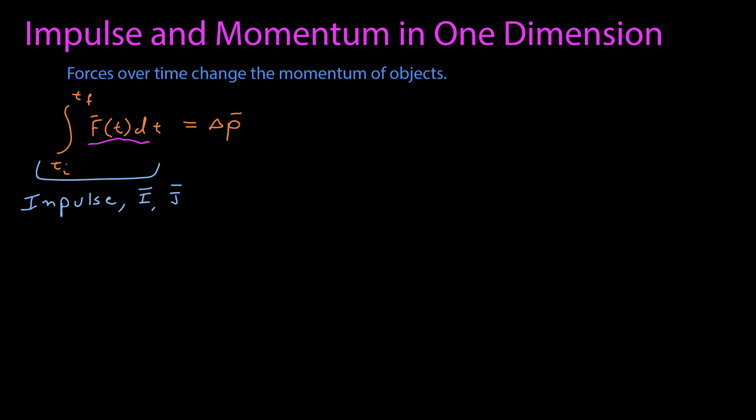It's sometimes given with a capital I or a capital J. Really we don't use the impulse symbol very much. Often just the integral is equal to the change of momentum, but sometimes for shorthand it's easier to just write I or J. Both the impulse and the momentum and change of momentum are vectors.